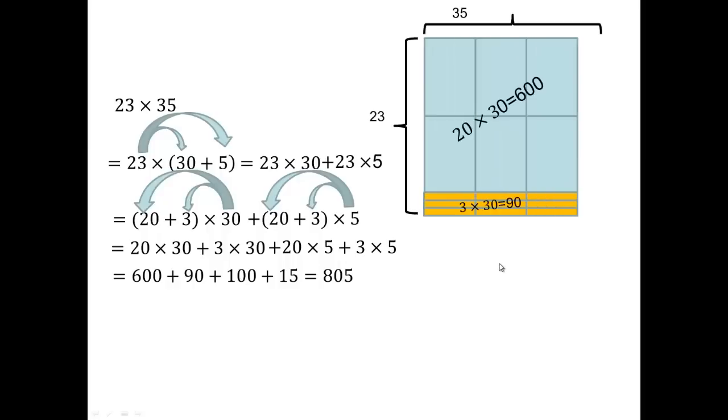Let's do a visualization of that same thing. So we have 20 times 30 here, that's the 600. We have 3 times 30, which is the 90. That gave us the 23 times 30. Now we have 23 times 5. So 20 times 5, which is this part here. And then 3 times 5, which is the 15 over here. Distributive property allows us to visualize it, or you can do it algebraically. I want you to be able to do all three ways, because it will give you a really good sense of what multiplication is.